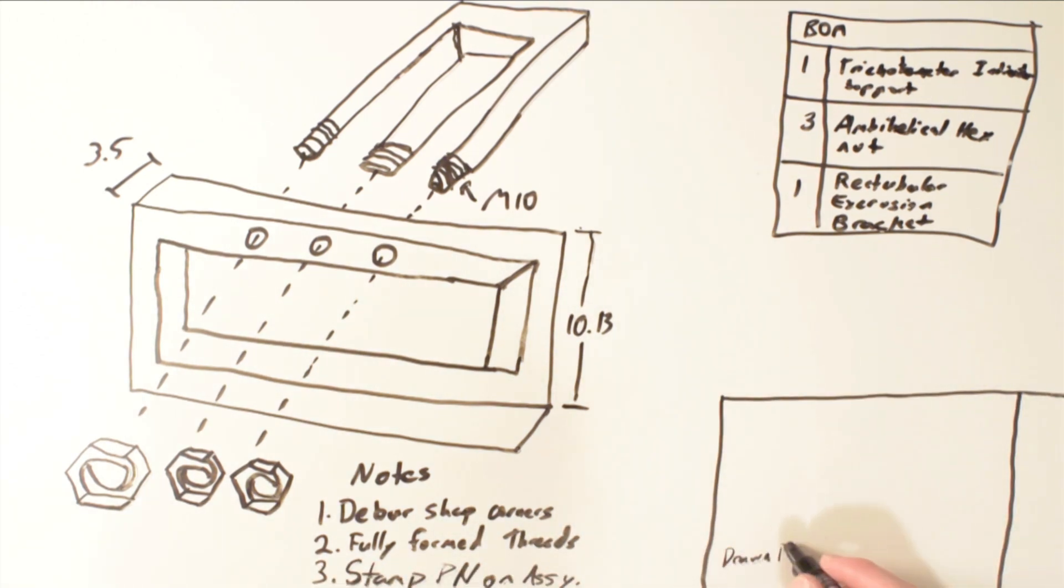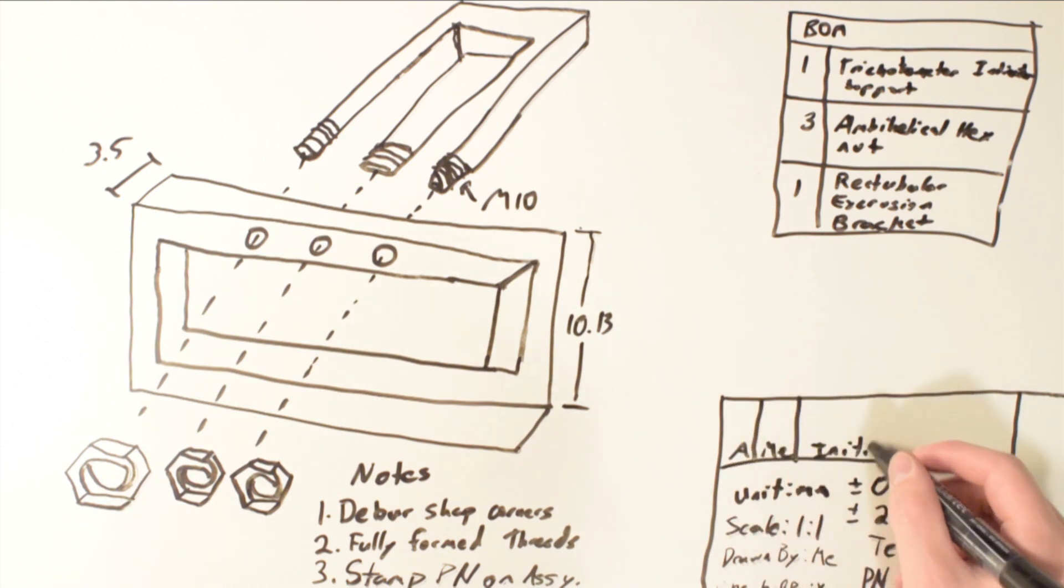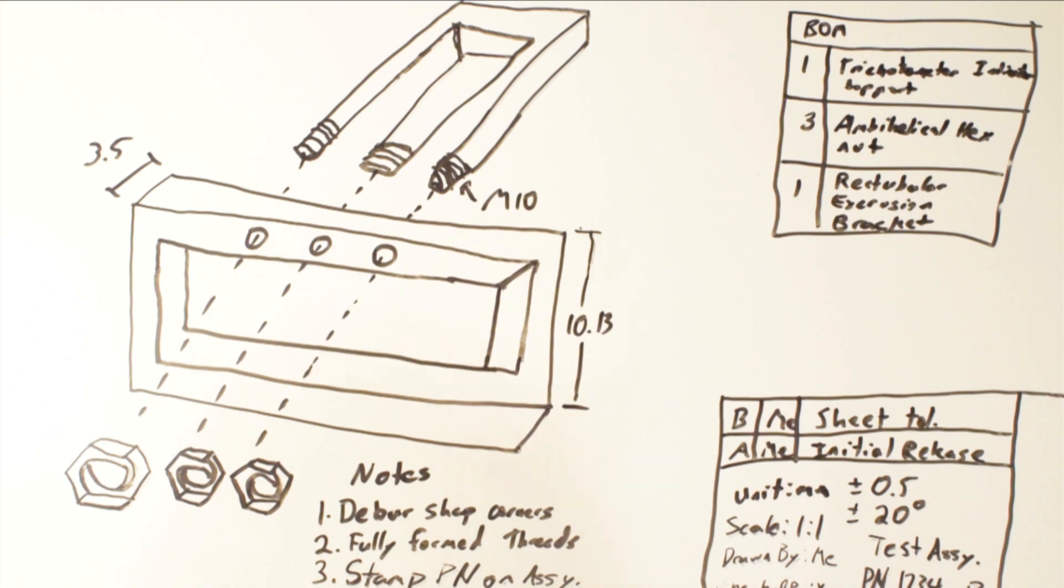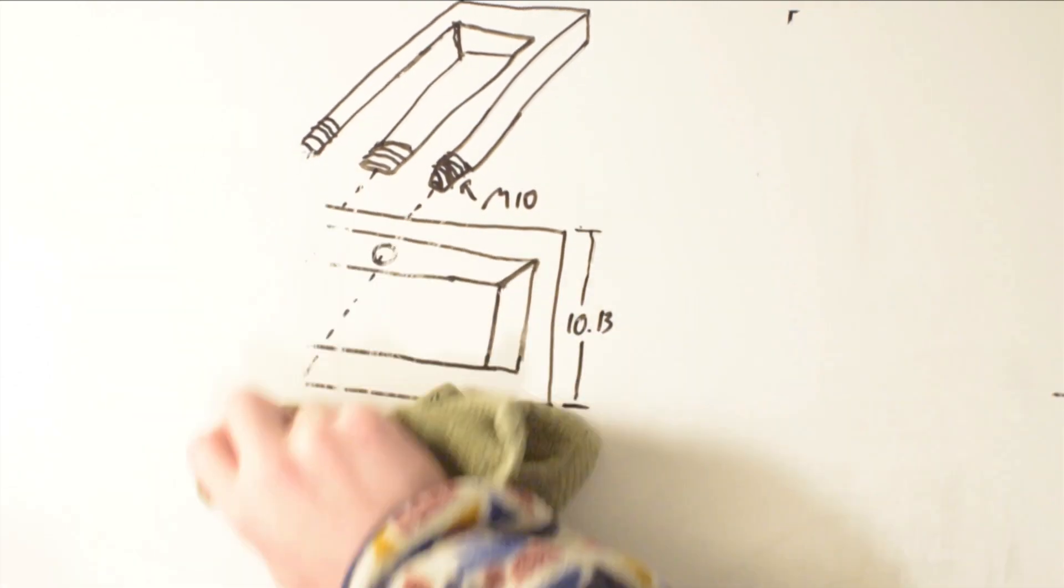The revision table will have information such as what changed in each revision and who made the changes. The BOM in an assembly drawing is where you would indicate which part numbers are required for the assembly, and in a part drawing you may indicate the required material here. General notes are where you would put information such as your heat treating requirements, serialization requirements, or coatings.